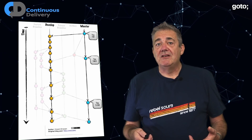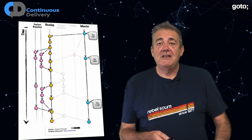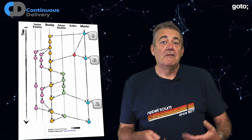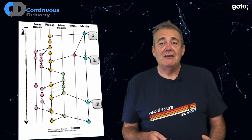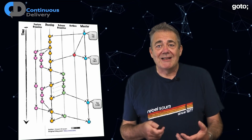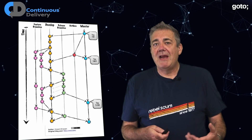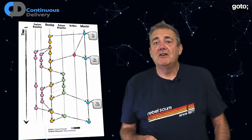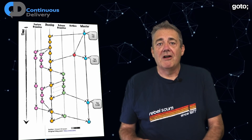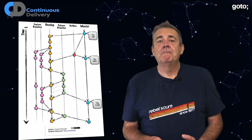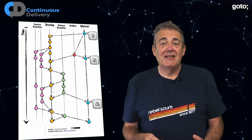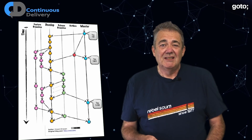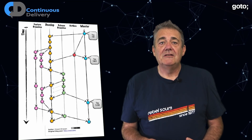Supporting these branches are a bunch of others: feature branches, release branches, and hotfix branches — five different kinds of branch in all. But in practice there may be many more branches than that in play, because there'll be multiple versions of feature, hotfix, and release branches. This is a complex branching strategy and, as I said in the intro, it works against continuous integration.